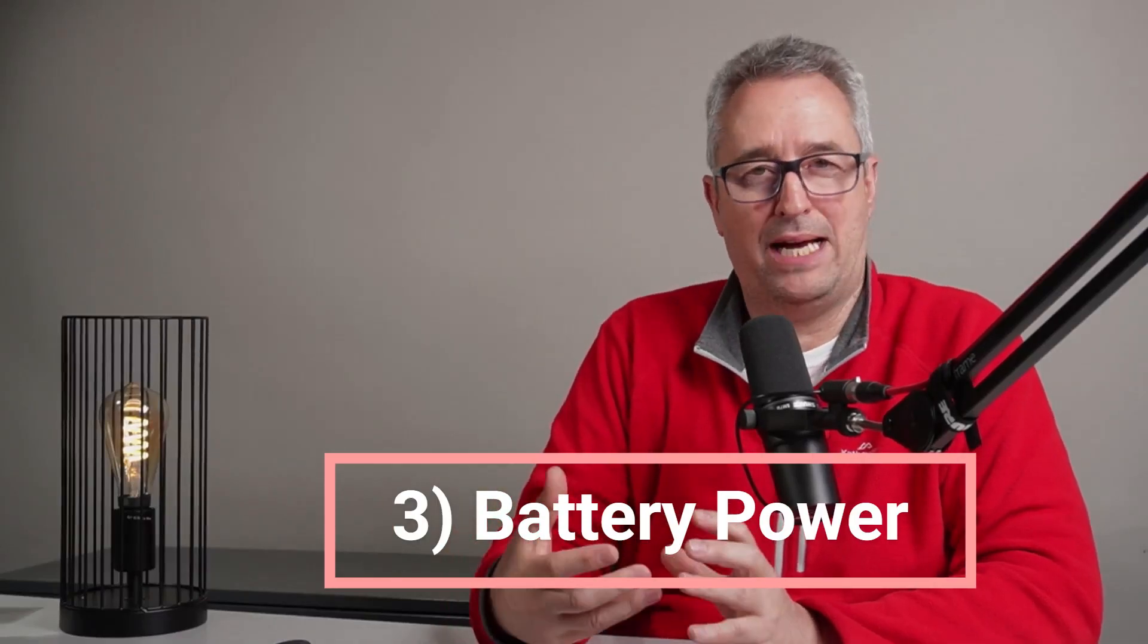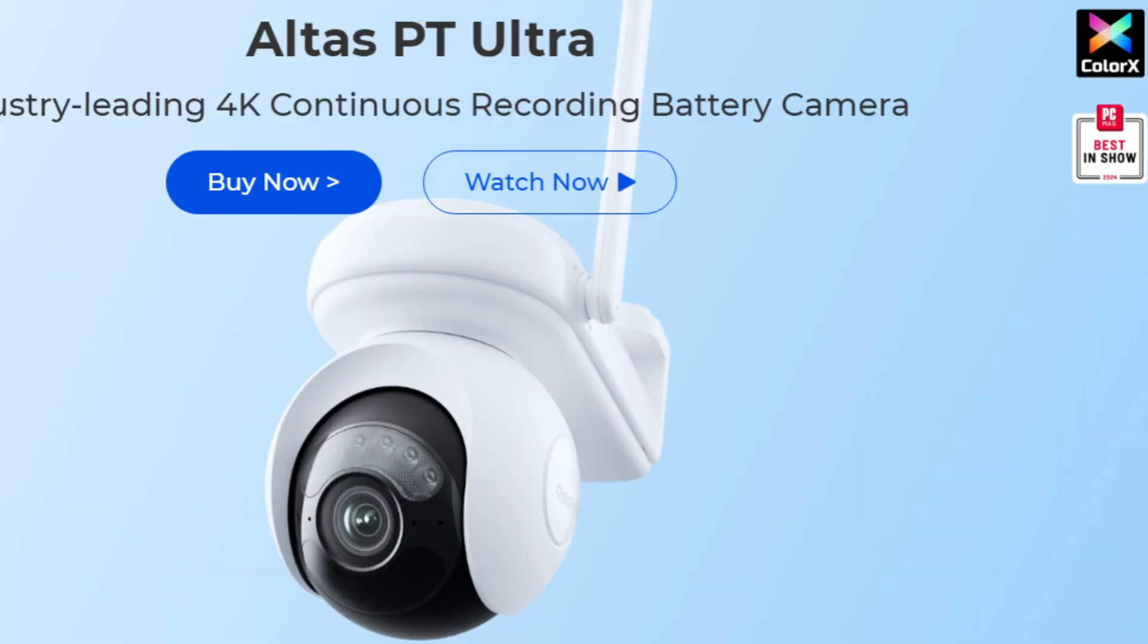Point number three is about battery cameras. If there's no way that you can get a power or an Ethernet cable to your camera then it's really worth having a close look at battery cameras. The first thing to consider is how many milliamp hours the battery that's running that camera has. For example, the Argus PT Ultra has a 20,000 milliamp hour battery that can last up to seven days with 12 hour recording each day.